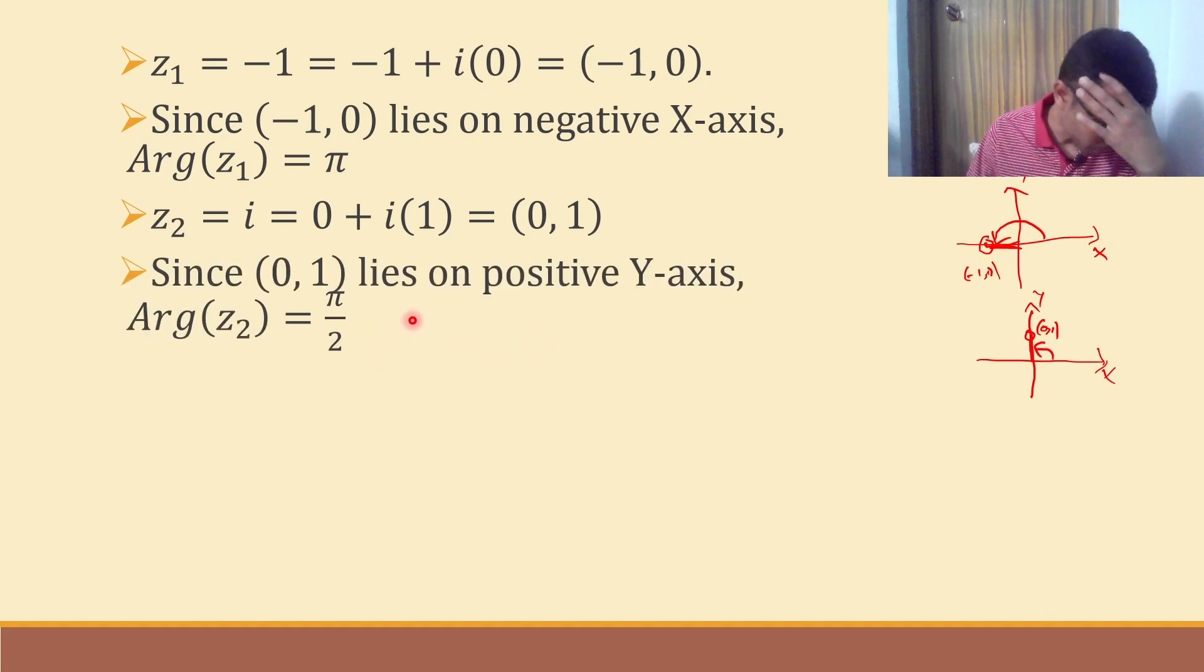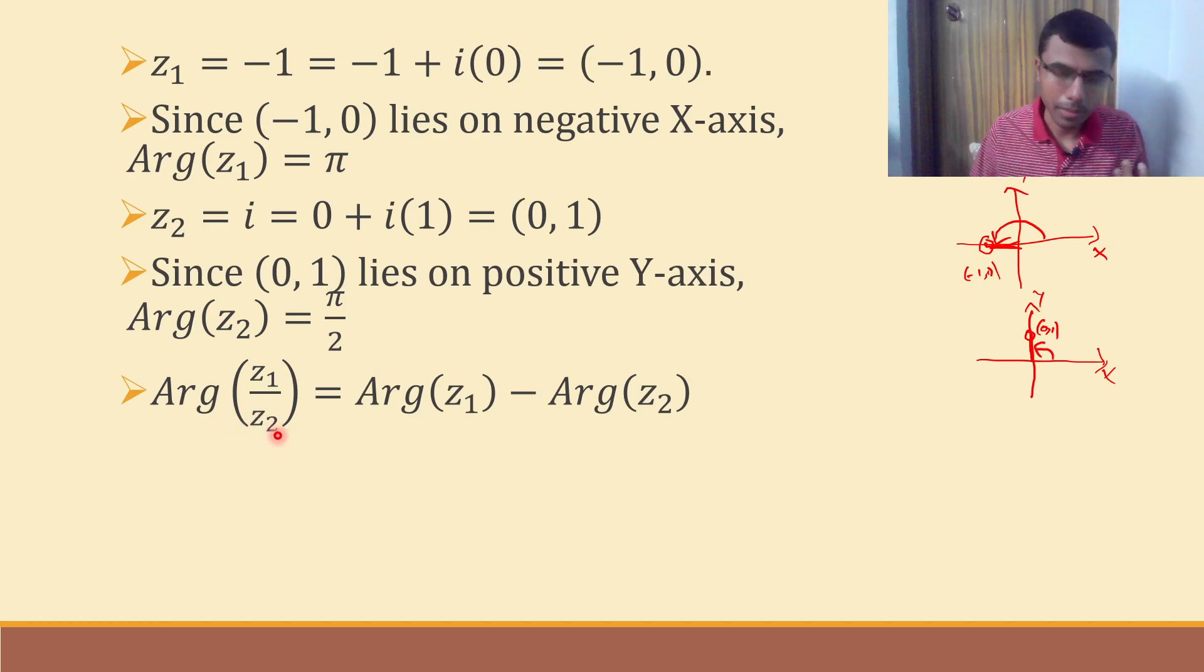So the argument is π by 2 since it lies on positive y-axis. Argument of z2 is nothing but π by 2. Now they're asking us to find out argument of z1 by z2. Argument of z1 by z2 in this case is nothing but argument of z1 minus argument of z2.